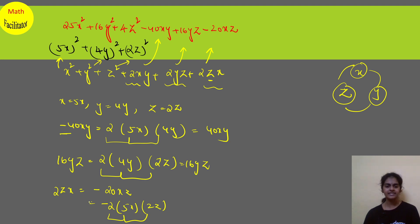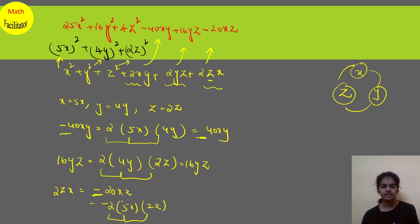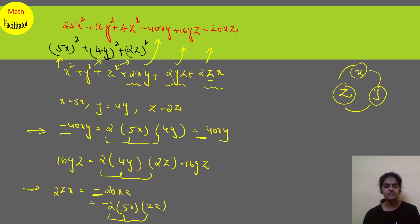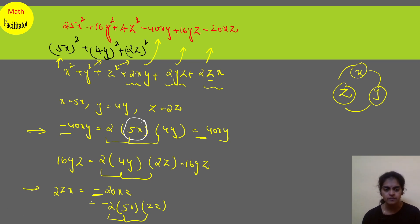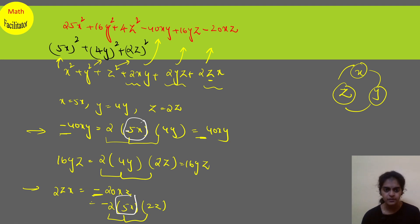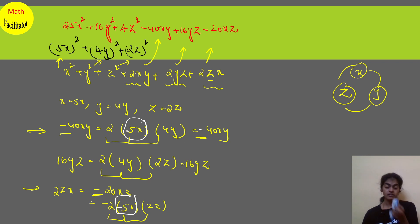Clearly this term and this term are both negative. If I want a negative sign here, something is common between these terms — the x term is common. So just put a minus sign to this x term and you will get your answer by simply placing a minus sign.